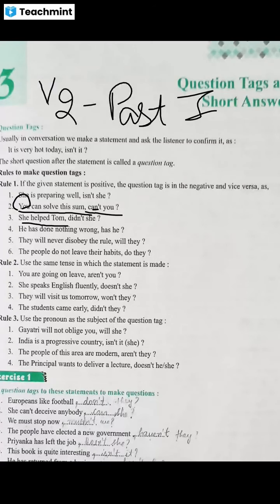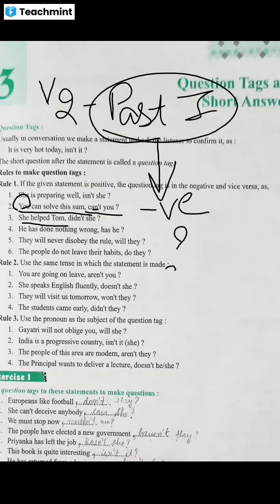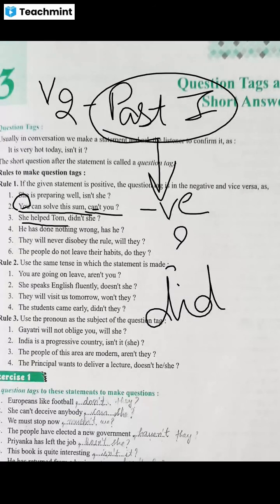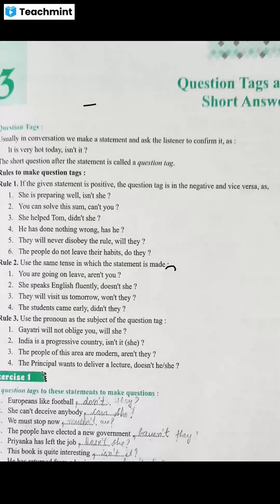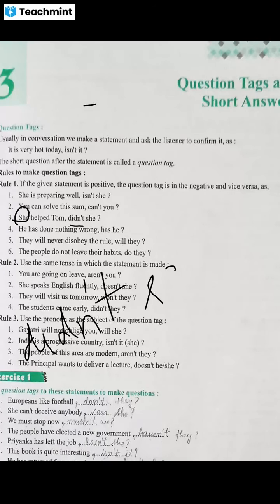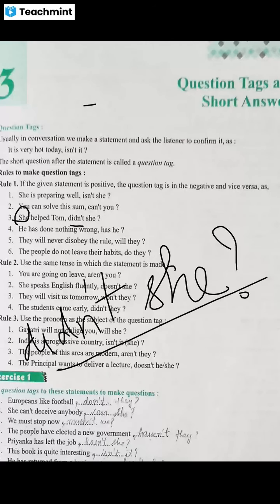Past indefinite is a rule. When we use a negative or interrogative sentence, the helping verb 'did' comes. So the helping verb here is 'did'. Check the sentence — if positive, the tag becomes negative: 'didn't she?'. She is the subject, so the tag is 'didn't she'.